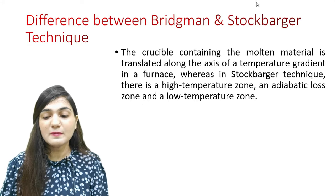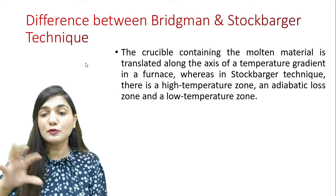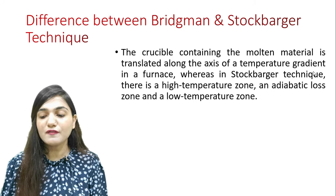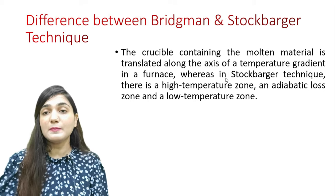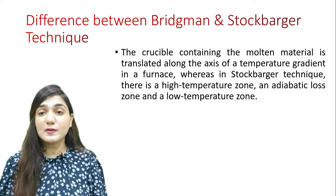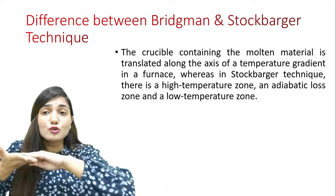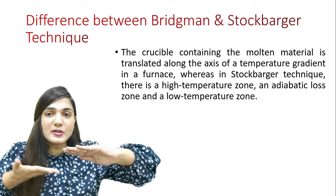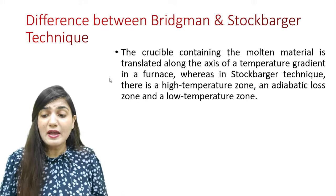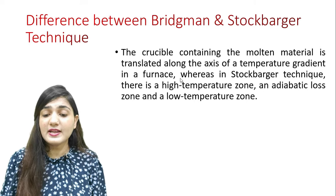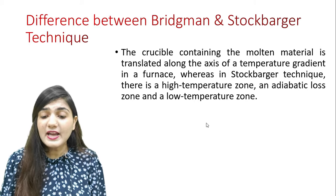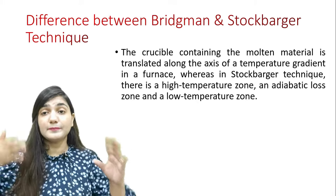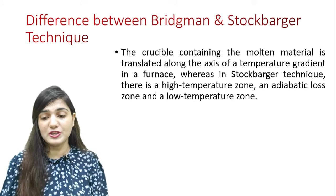Coming to the difference between Bridgman and Stockbarger techniques — they are both different. In the Bridgman technique, the crucible containing the molten material is translated along the axis of a temperature gradient in the furnace. Whereas in the Stockbarger technique, we have a high temperature zone, an adiabatic zone, and a low temperature zone — three distinct temperature zones. In the Bridgman technique, there are gradual degrees of temperature change.